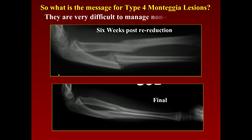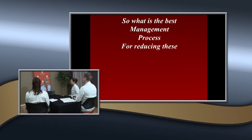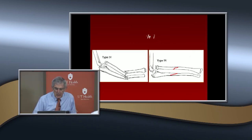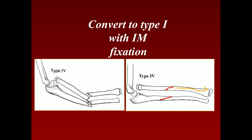The message for type 4 lesions: it's very difficult to manage non-operatively. The best management process is intramedullary fixation. What you need to do with a type 4 lesion is convert it to a type 1 by putting intramedullary nails in there — now you have a lever arm, you have a type 1 lesion, and then you treat it like a type 1 lesion.